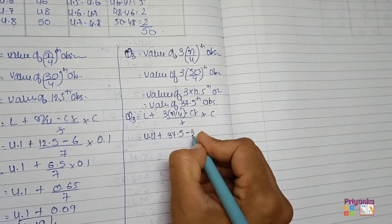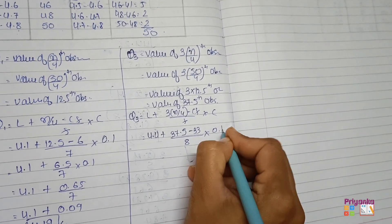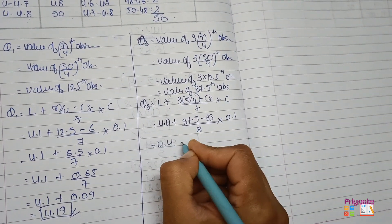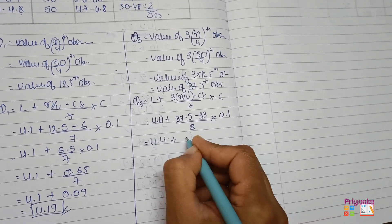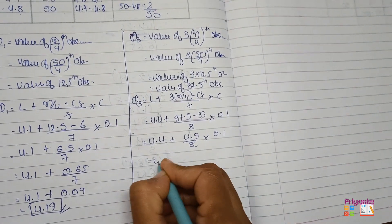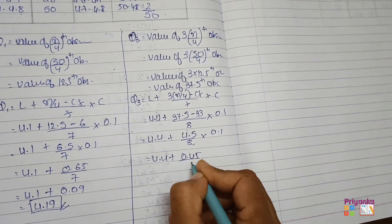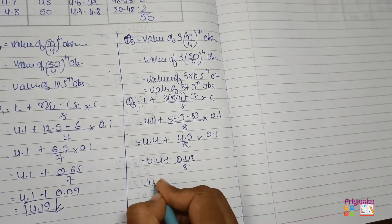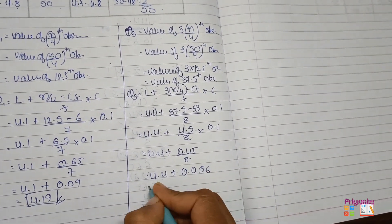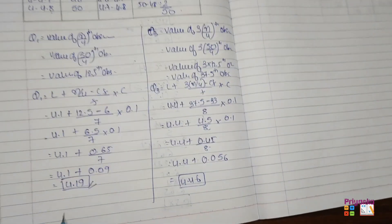Minus CF that is 33, and the frequency is 8 into the class length 0.1. 4.4 plus the subtraction of this 4.5 upon 8 into 0.1. Get them multiply, you will get 0.45 divided by 8. And the division of this two will be 0.056, and the final answer 4.46. So here we are ready with the Q1, Q3, and next we need is median.